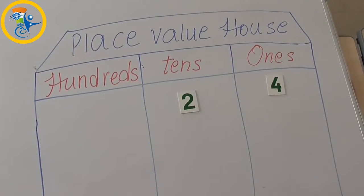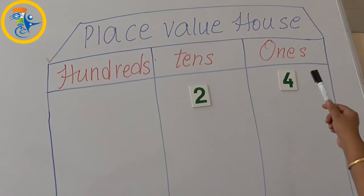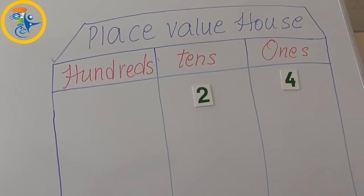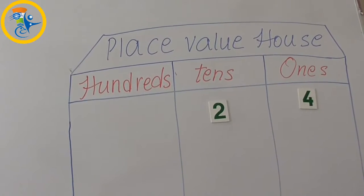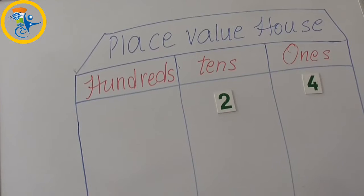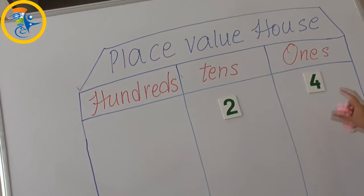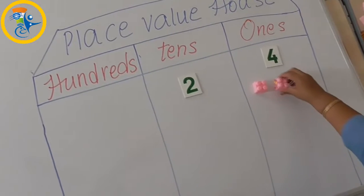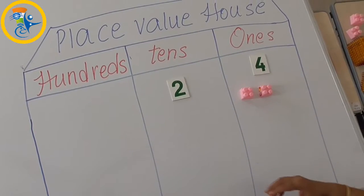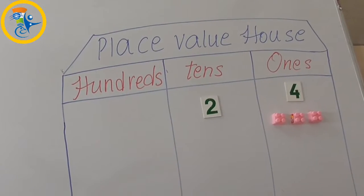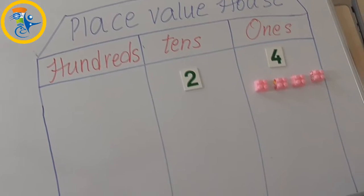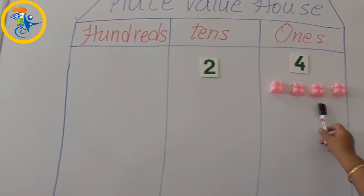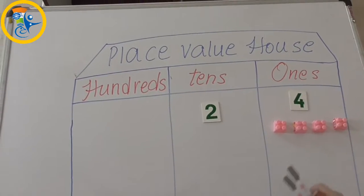Now we will understand this with the help of a grid and blocks. 4 at ones — I am going to place this block. This is 1, 2, 3, and 4. So 4 at ones is 4 ones.